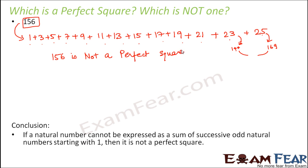So the conclusion here is, if a natural number cannot be expressed as a sum of successive odd natural numbers, starting with 1, then it is not a perfect square.